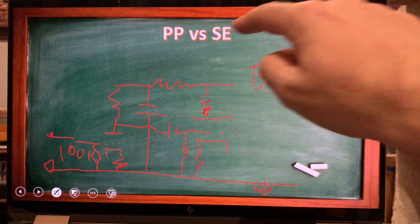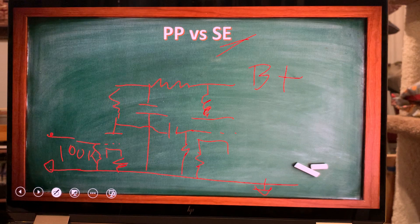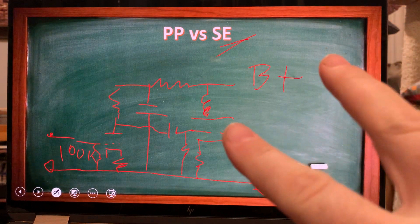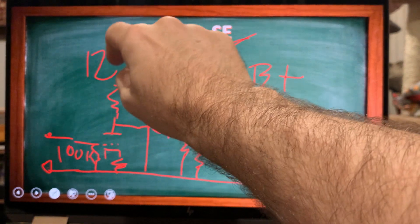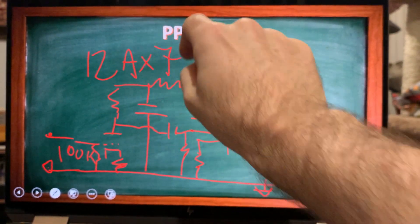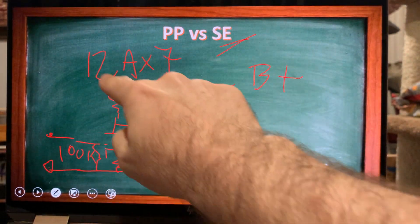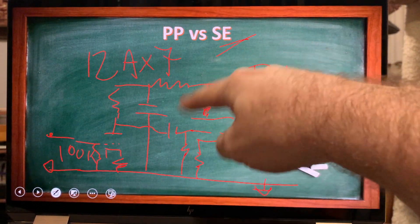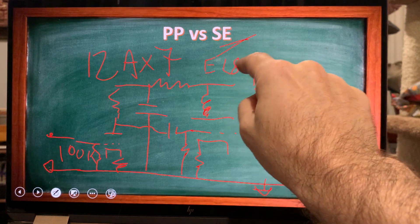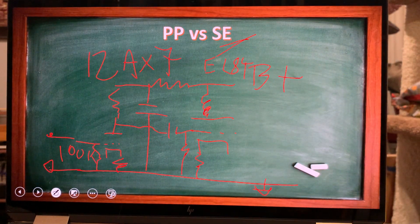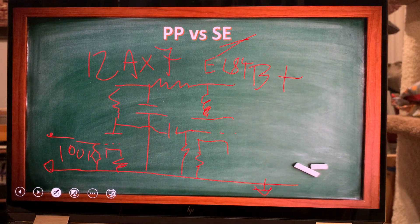So what does this mean here? So basically, this is the single-ended scenario, and here we have two vacuum tubes. So maybe, let's say we have a 12AX7, one section, and for the power tube, let's say we have an EL84, but we are connecting it in triode mode.